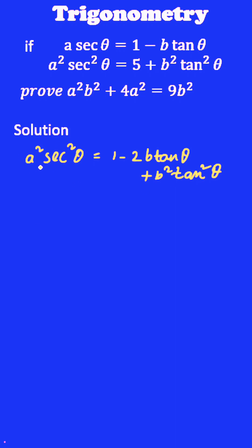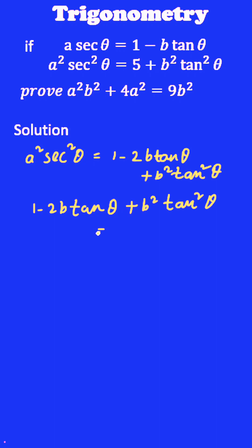Now, put the value of a²sec²θ in the second equation and you will get 1 - 2b·tanθ + b²·tan²θ equal to 1 + b²·tan²θ. From both sides of the equation, cancel out b²·tan²θ.